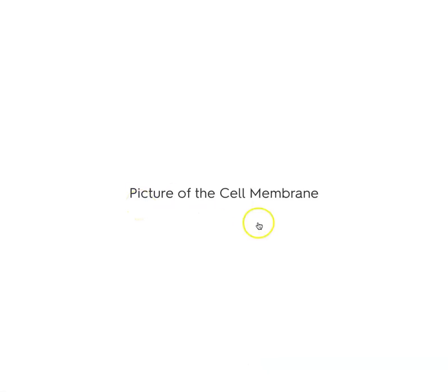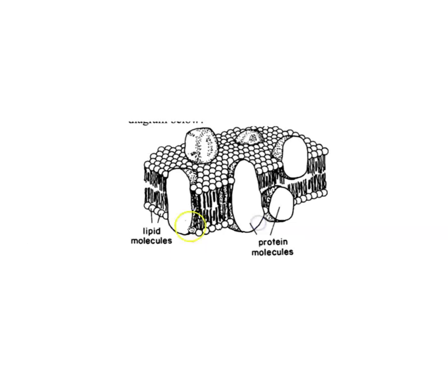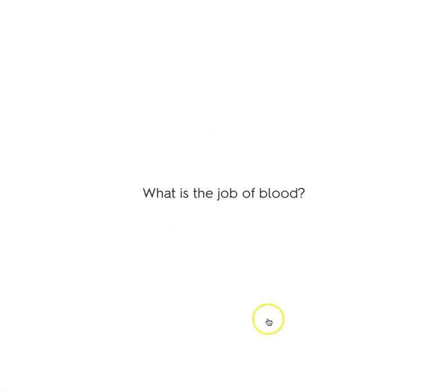Picture of a cell membrane — this is what the cell membrane looks like. You have the phospholipid bilayers, you have the proteins and protein channels, and you have receptor molecules.